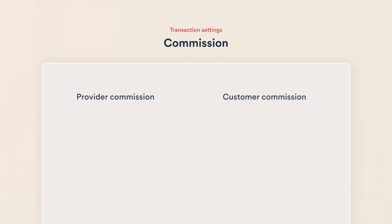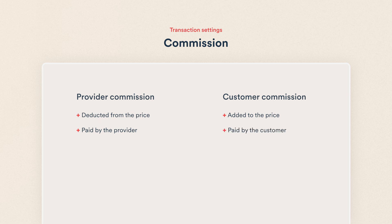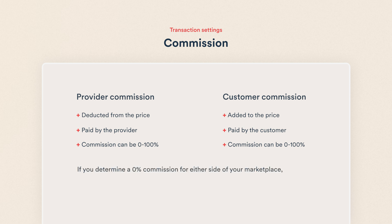The provider commission is deducted from the transaction price and paid for by the provider, as the name suggests. The customer commission is charged on top of the transaction price and it's paid by the customer. Both commissions can be anything from 0 to 100%. If you set a 0% commission for either side of your marketplace, that side will not pay additional fees on a transaction.